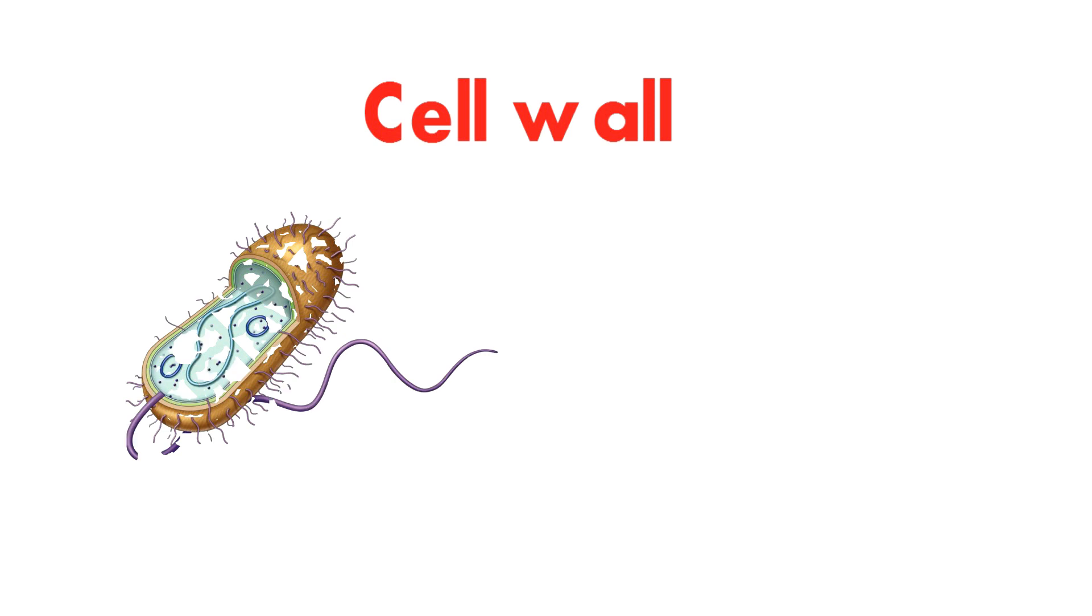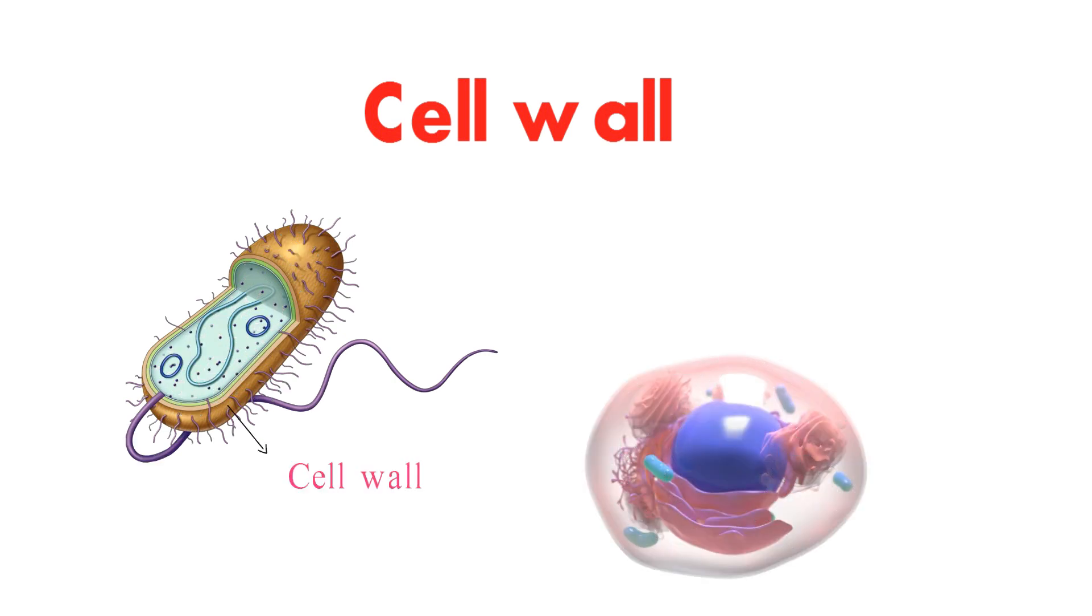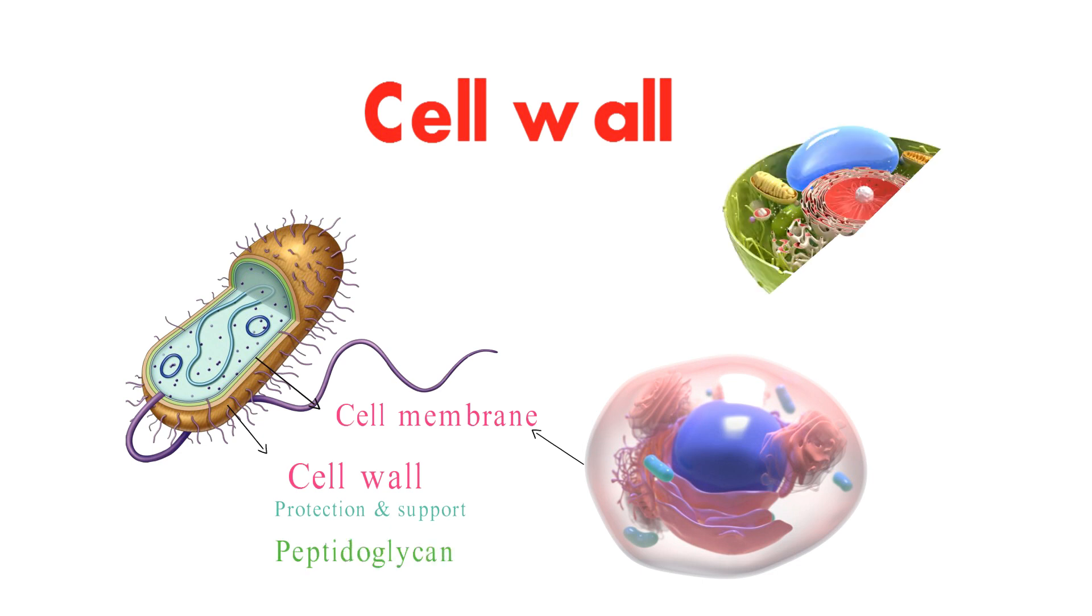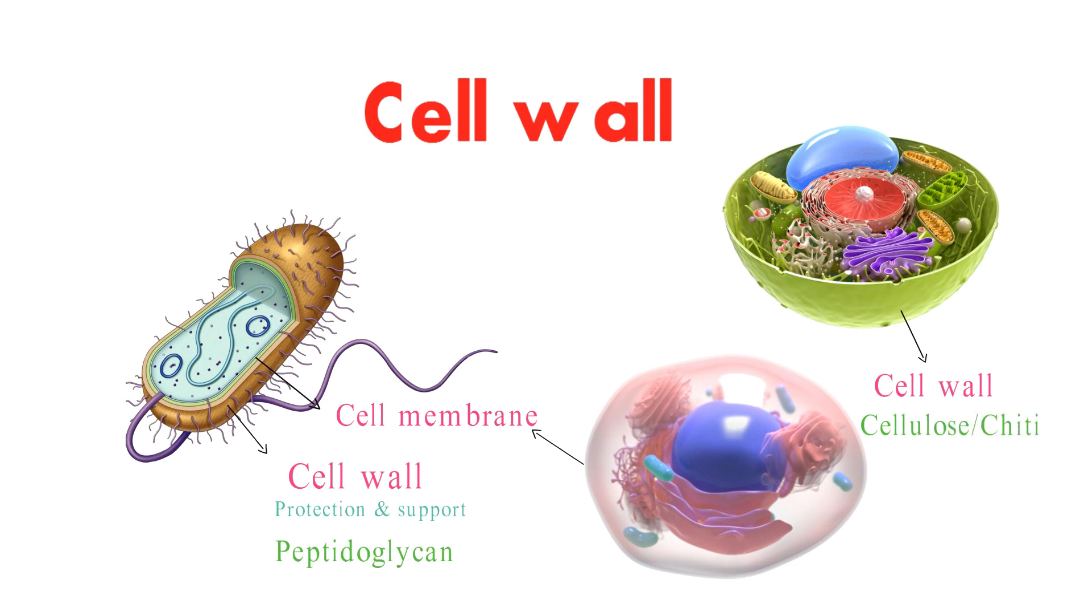Prokaryotic cells often have a cell wall, while eukaryotic cells generally do not. The cell wall is a rigid structure that surrounds the cell membrane and provides protection and support for the cell. Prokaryotic cell walls are made of peptidoglycan, while eukaryotic plant cell walls are made of cellulose or chitin.